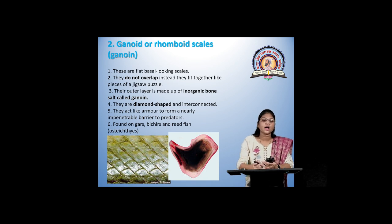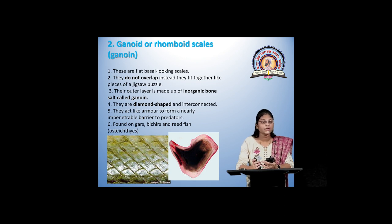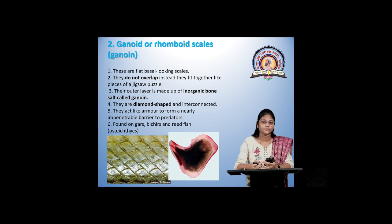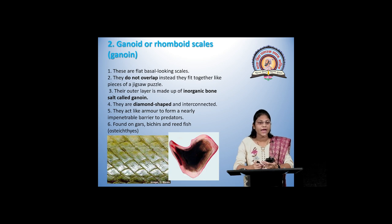These scales are somewhat rhomboidal in shape — diamond-shaped — and they do not overlap each other; they are interconnected. They fit together like a jigsaw puzzle or tiles. They are seen in ganoid species such as gars, bichirs, and reed fishes.